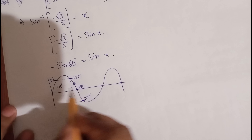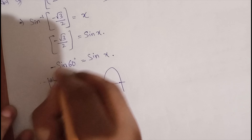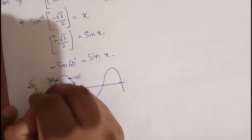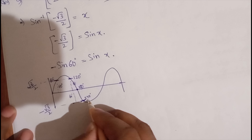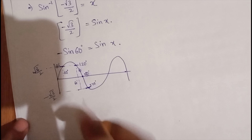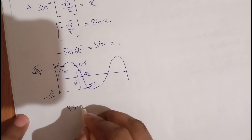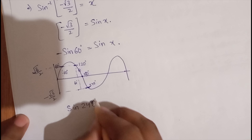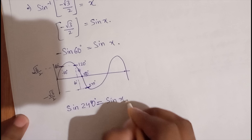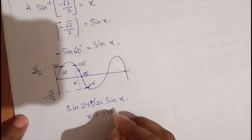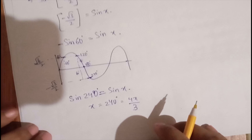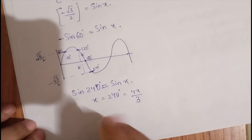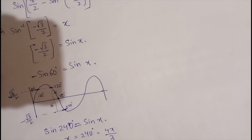The value of sine 60 is root 3 by 2, and going down gives minus root 3 by 2 at sine 240 degrees. So instead of minus sine 60, we can write sine 240 degrees equals sine x, meaning x equals 240 degrees. In radians, x equals 4π/3.